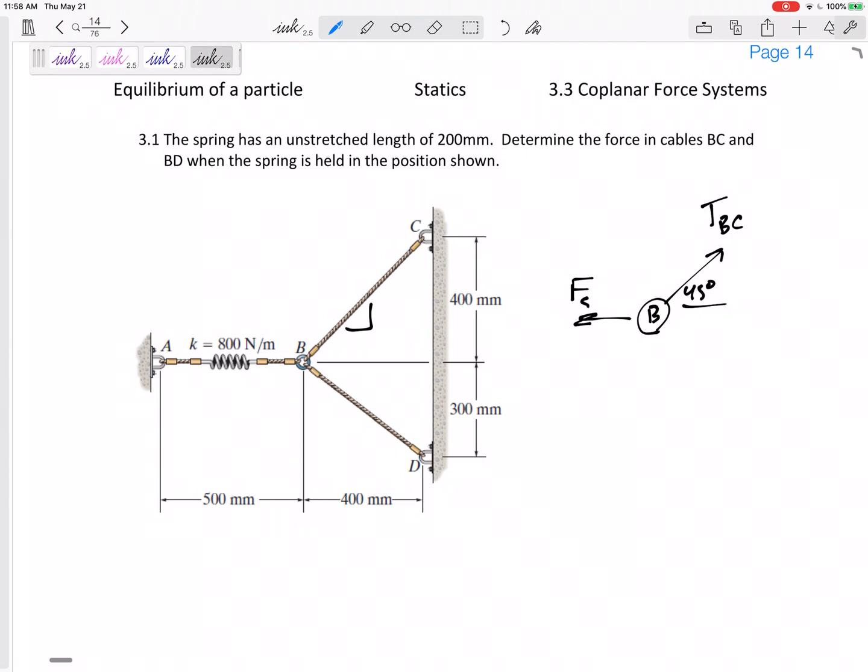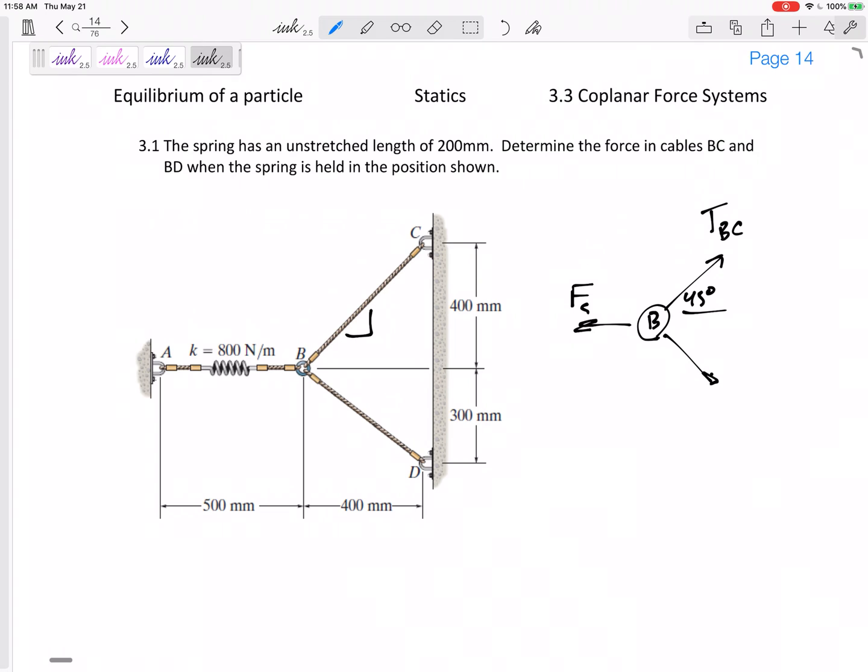It's at a 45 degree angle, and then I've got the tension in BD. Now be careful, that looks almost like 45, it's not. It's at a 300 by 400. All right, so it is at a 300 by 400 or a 3 by 4. So I'm just kind of looking at the angle, 3 by 4. By A squared plus B squared equals C squared, you know, I can find 5. So instead of 3-4-5.